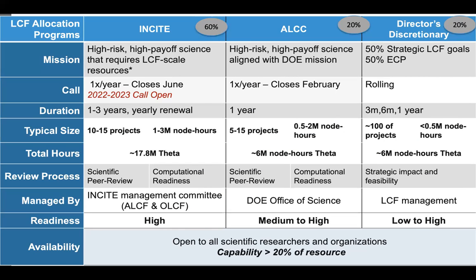I find this slide a really valuable quick reference. It might help you figure out where you'll fall in terms of your project's needs. It gives a sense of the frequency, the mission of the programs, and what their average size is. For INCITE, we're looking at high-risk, high-payoff science — a relatively small number of projects, between 10 and 15, that receive very large fractions of time. You'll see that reflected in Polaris and eventually on Aurora as well.